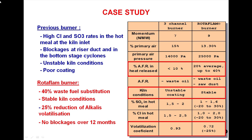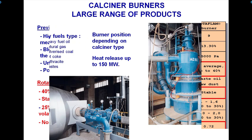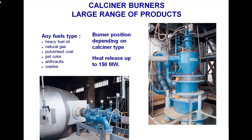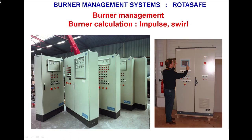Pre-channel burner data: momentum, primary air power percentage, primary air pressure, AFR, kinematic conditions, S4-3, hot meal percentage of S4-3, percentage of Cl and Bi, vaporization coefficient. Large range of products — calciner burners. Any fuel type: heavy fuel oil, natural gas, pulverized coal, pet coke, anthracite, and waste. Burner position depending on calciner type. Heat capacity up to 150 MW. Burner management, burner calculation, impulse and swirl type.